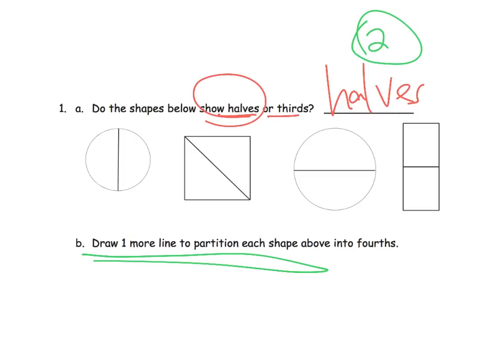It says draw one more line to partition each shape above into fourths. So the idea is we have two pieces — now let's cut them up into fourths. In the circle we don't have much of a choice, and I guess we don't have much of a choice with a square either. Now this one we do have a choice. So one way we can do it is draw one line. Now we're really closely following the directions: draw one more line to partition each shape into fourths. There we go.